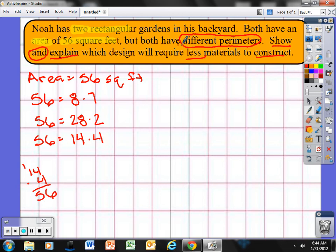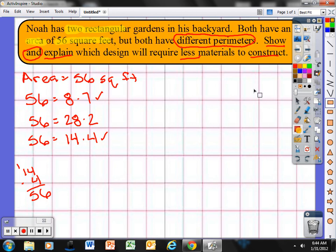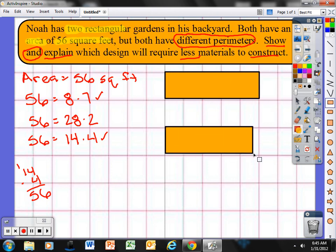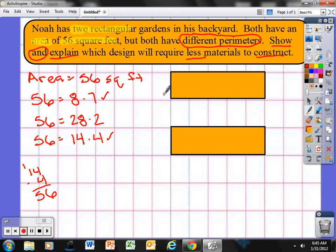OK good, so that's a lot. So I know both have 56 square feet but have different perimeters, so I'm going to use this one and this one. So I want to construct two rectangular gardens. There's one rectangular garden. Here's another. All right, let's take a look here.